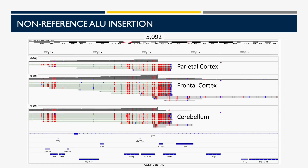Next, I'm showing a non-reference ALUYA5 event in the intron of the EED gene. Again, this event is also shared between all regions of the brain from this individual. The coverage tracks are again shown in dark gray, but in this image the reads are now shaded by CpG methylation, which we can get directly from base-calling our reads with GUPY. The red positions in the reads correspond to methylated CpGs, and the blue shows unmethylated CpGs. Overall, this region is mostly methylated and it's consistent between brain regions. These examples show our ability to capture MEIs and start to explore the methylation of these elements.